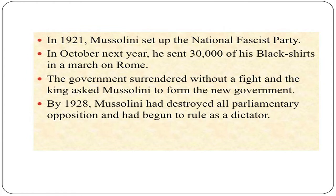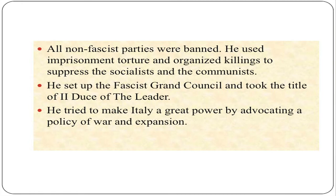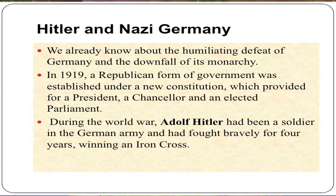In October of the next year, he sent 30,000 of his Blackshirts in a march on Rome. The government surrendered without a fight and the king asked Mussolini to form the new government. By 1928, Mussolini had destroyed all parliamentary opposition and had begun to rule as a dictator. All non-fascist parties were banned. He used imprisonment, torture and organized killings to suppress the socialists and communists. He set up the Fascist Grand Council and took the title of Duce, or the leader. He tried to make Italy a great power by advocating a policy of war and expansion.